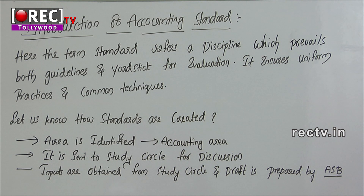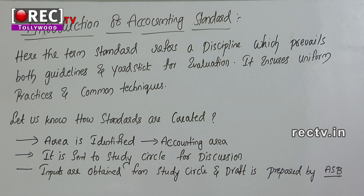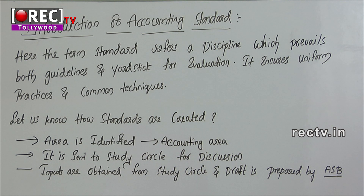Inputs are obtained from the study circle and a draft is prepared by the ASB — Accounting Standards Board. An exposure draft is released to the public for comments, so that if anything is wrong it can be identified. After considering comments from the public, a revised exposure draft is prepared and again released to the public for comments.